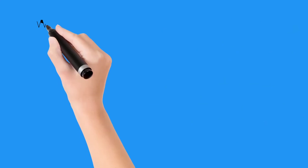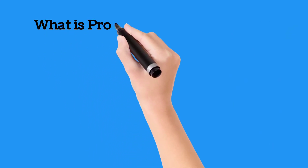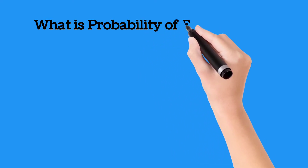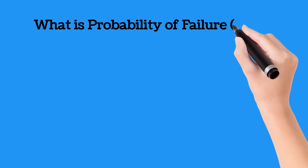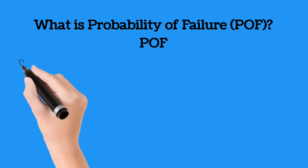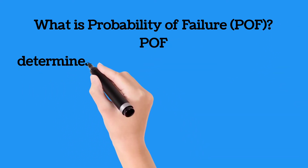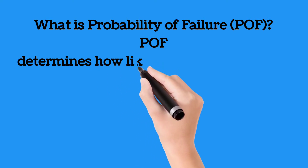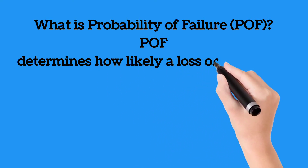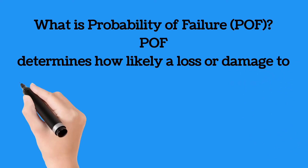Probability of failure is the likelihood that a piece of equipment will fail at a given time, and it is an important part of effective risk analyses. Probability of failure is half of the equation when determining overall risk as part of risk-based inspection methodology.